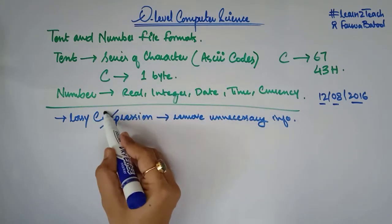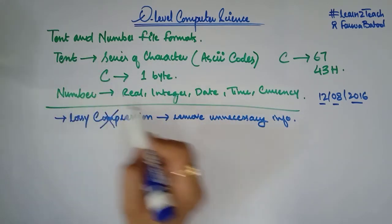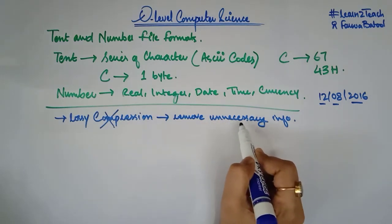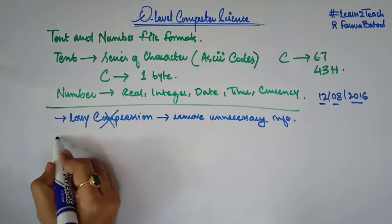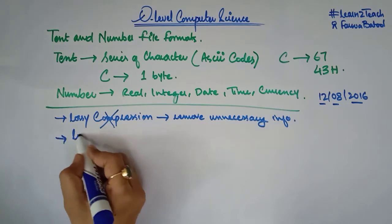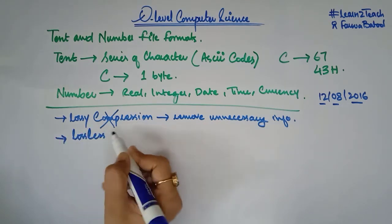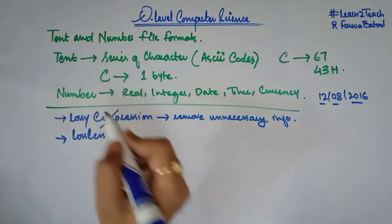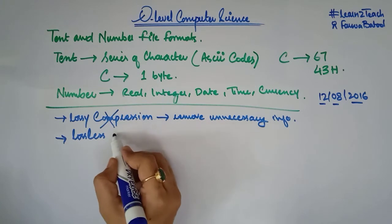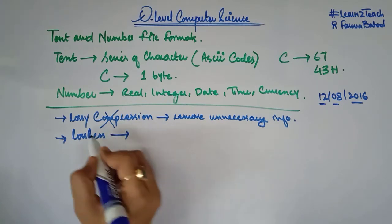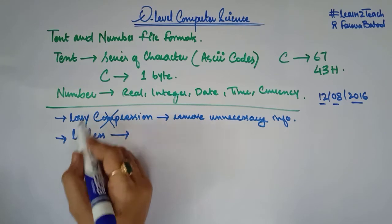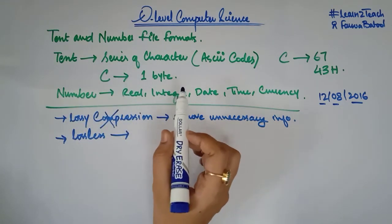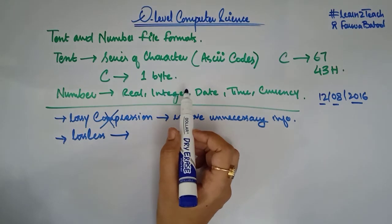Keep in mind that we cannot use lossy compression for both text and numbers because they do not have any unnecessary information. The lossless compression, on the other hand, can be used for text or numbers. Let's see how this compression can be used to compress text files or number files with an example.